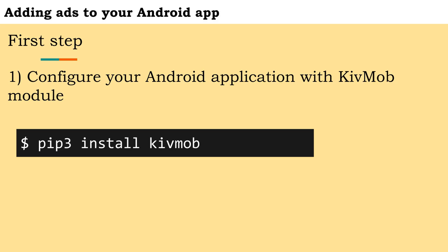The first step to add ads to your app is to configure your code with the commands from the Kivmob module. Kivmob is a simple Python library that allows developers to easily monetize their Kivi mobile applications using Google AdMob. It is available for both Python 2 and 3.